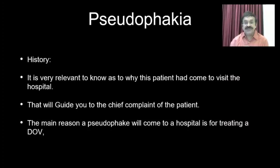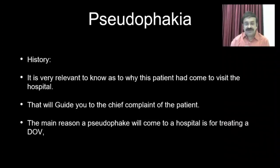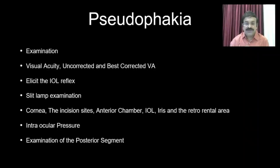Now in pseudophakia, you will have to take the history. It is very relevant to know why the patient has come to the hospital — this will guide you to the chief complaint. The main reason a pseudophakic patient will come to the hospital is usually a dimness of vision (DOV). This DOV can be due to any reason, and it is very relevant to know the duration, the progression, whether it was gradual or sudden, painful or painless — everything will give you a fair indication of which kind of complication he was suffering from after his surgery.